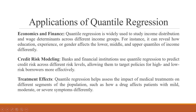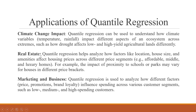Treatment effects: quantile regression helps assess the impact of medical treatments on different segments of the population, such as how a drug affects patients with mild, moderate, or severe symptoms differently. Climate change impact: quantile regression can be used to understand how climate variables like temperature and rainfall impact different aspects of an ecosystem across extremes, such as how drought affects low and high yield agricultural land differently.